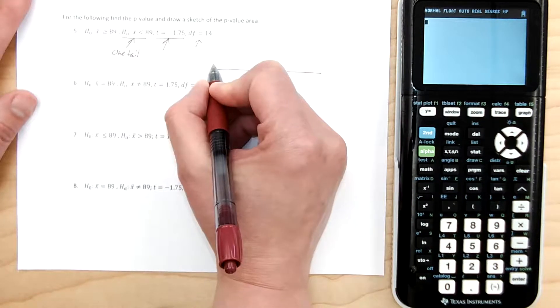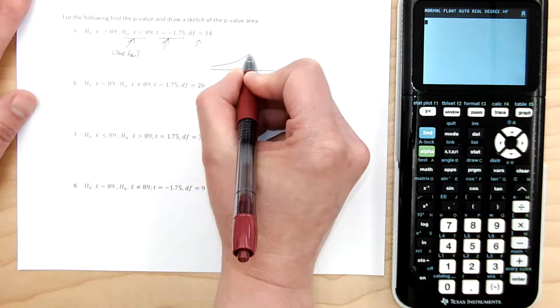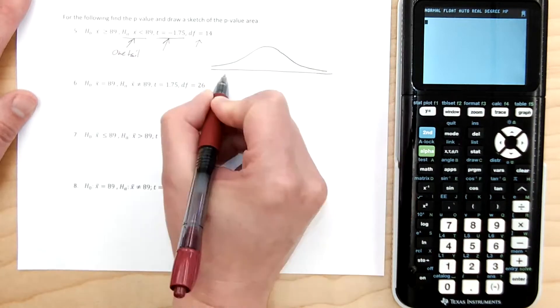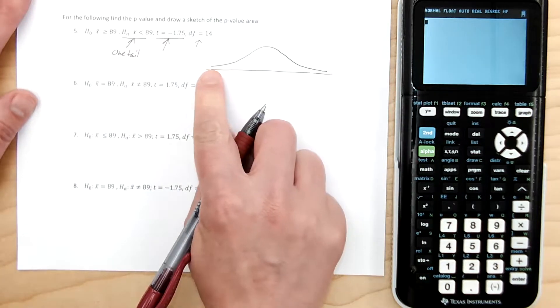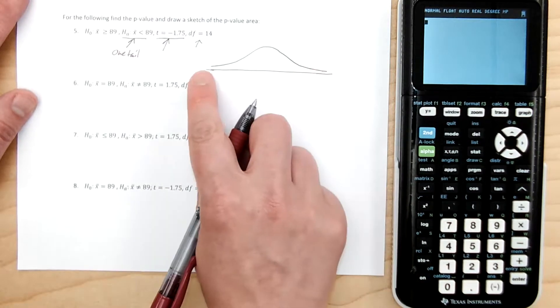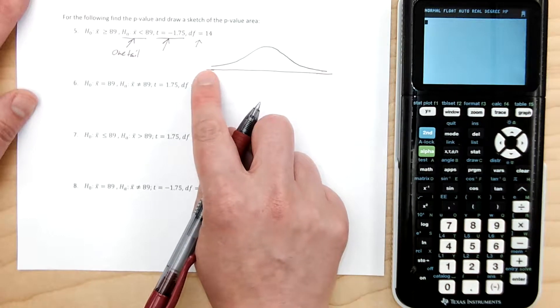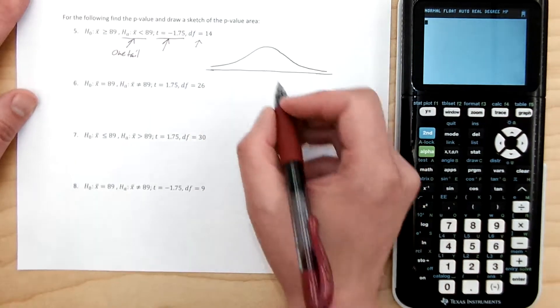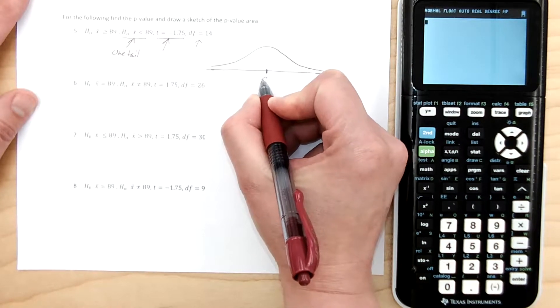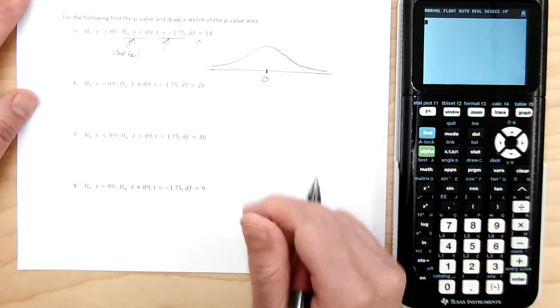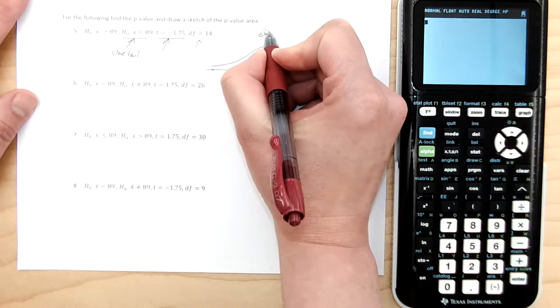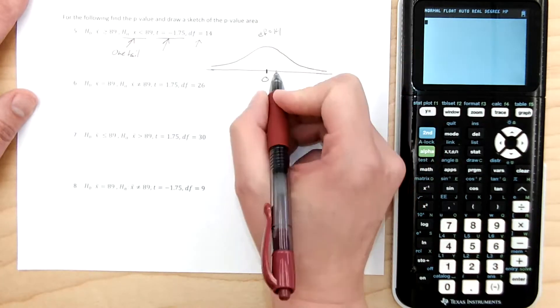So we're going to make a sketch of this, and remember that your T, your student T has—I usually draw it like this to tell myself it's a student T instead of a normal curve. Just to note, there's a little bit of extra area floating out at the ends out there. So just like the standard normal curve, T distribution, student T's are set at 0.